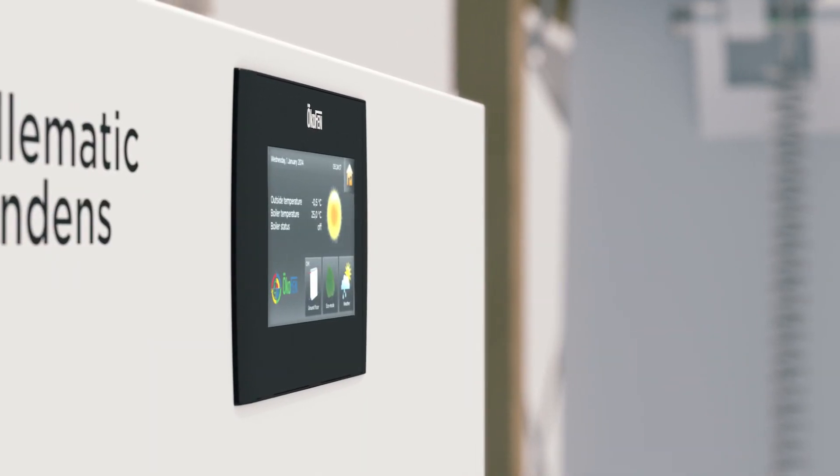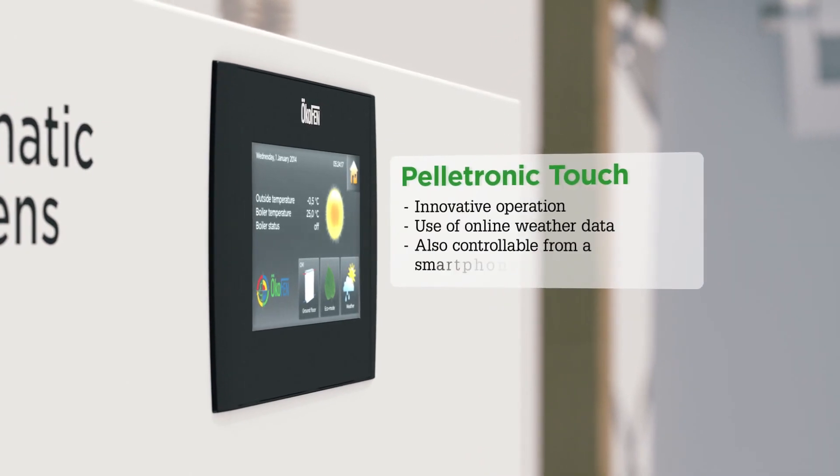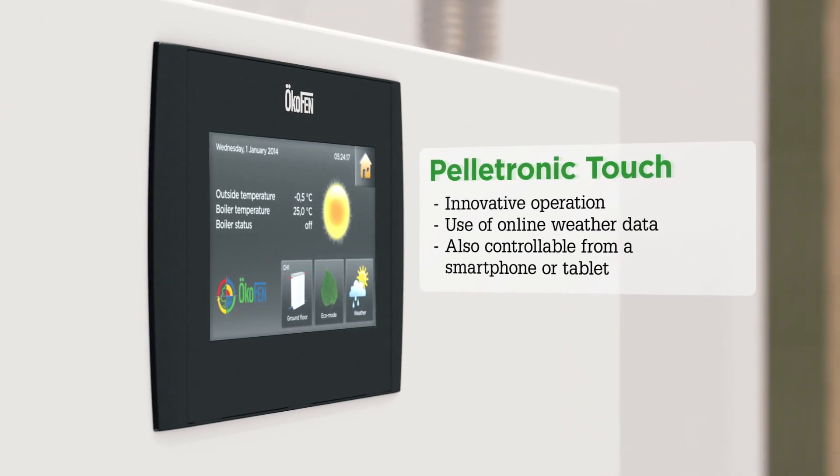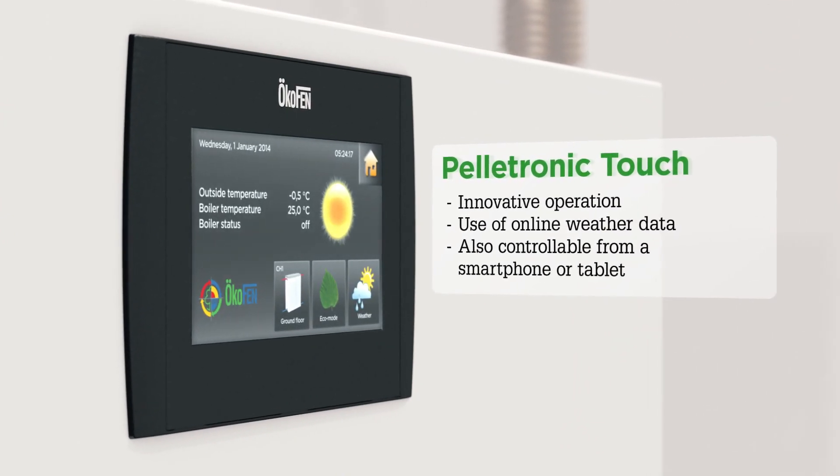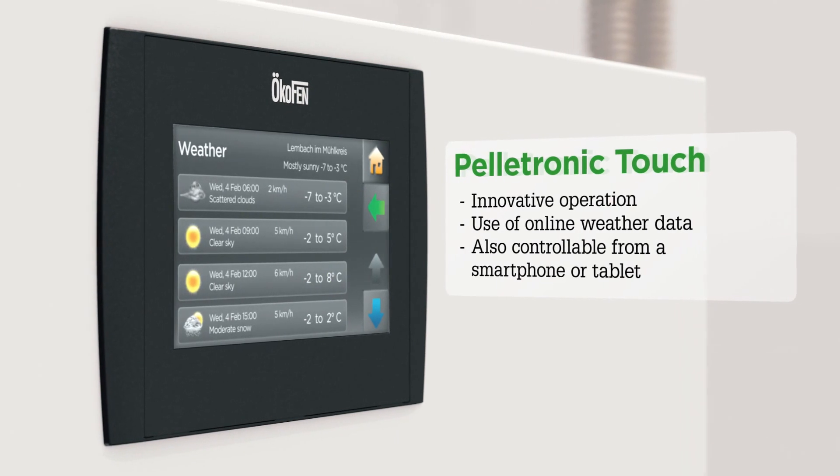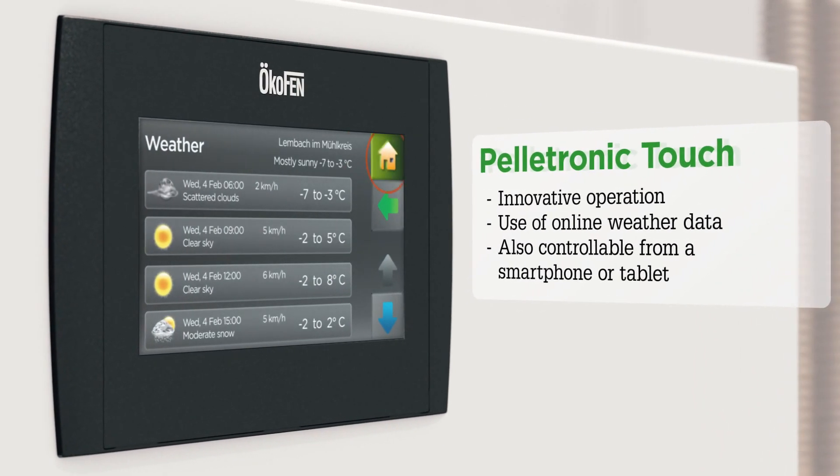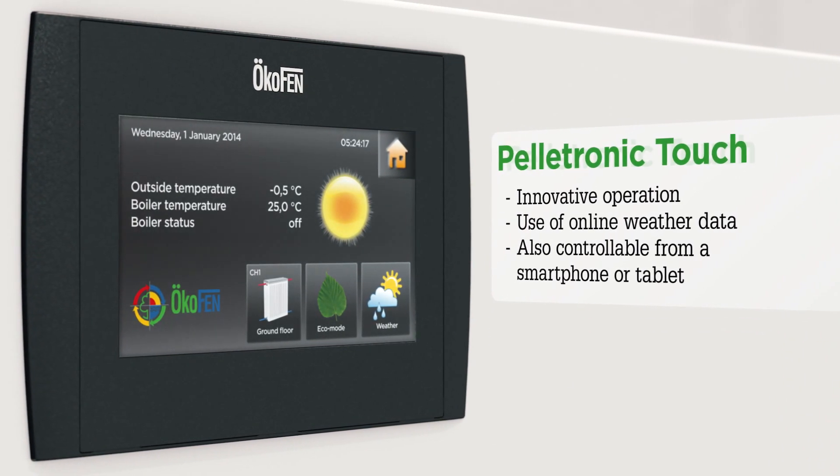Operation of the Pelomatic Condense is very straightforward and innovative. The clearly arranged illuminated graphic display can be operated at the press of a finger. The software enables utilization of online weather data, so when the sun shines, the pellet boiler has a rest. Simple operation via smartphone is likewise ensured.